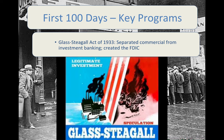So the Glass-Steagall Act tried to create commercial banks and investment banks as completely separate institutions. The other thing it did, which was even more important, was it created something called the Federal Deposit Insurance Corporation, or the FDIC.